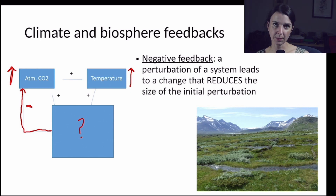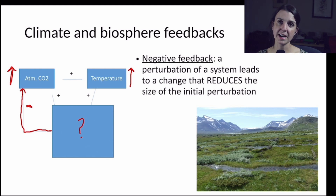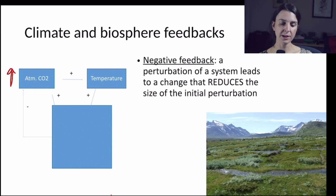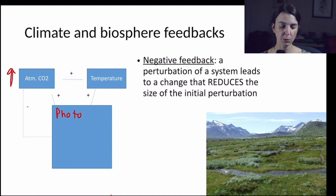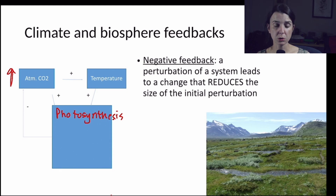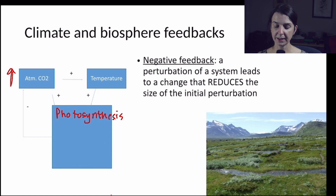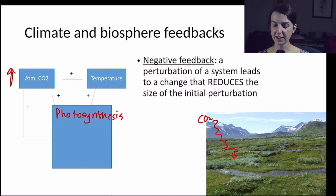Take a minute and think about what process we've talked about in the carbon cycle that could lead to just such a negative feedback. Increasing atmospheric CO2 levels may have a positive effect on photosynthesis, which is a major flux in the carbon cycle of the plants living in the tundra. We think that many plants currently might be at least partially limited by CO2 levels, and so with an increase in atmospheric CO2, we might expect to see those plants increase their rates of photosynthesis. When they do photosynthesis, they're sucking CO2 out of the atmosphere and using that CO2 to build sugars, and it will get locked away in the vegetation.